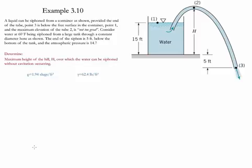Consider water at 60 Fahrenheit being siphoned from a large tank through a constant diameter hose. At the end of the siphon, it's below the bottom of the container by 5 feet. The atmospheric pressure is 14.7. We need to determine what is the maximum height of the hill where point 2 is located, over which the water can be siphoned without cavitation occurring.